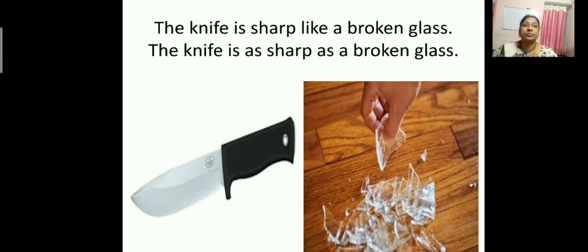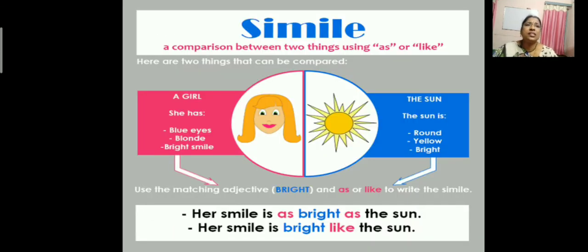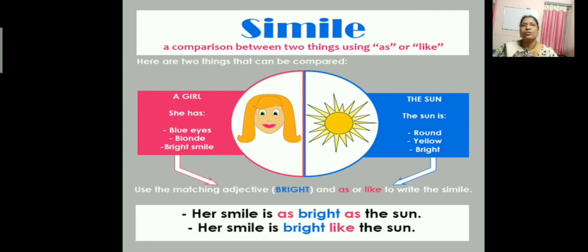Clear, children? Now let us see some more examples. A simile is a comparison between two things using 'as' or 'like'. Two things we compare using 'like' or 'as'. Here in the picture, we have two things. What is the first one? Girl. The second one is the sun. When we take two things we need to describe them — we have to identify the adjectives.